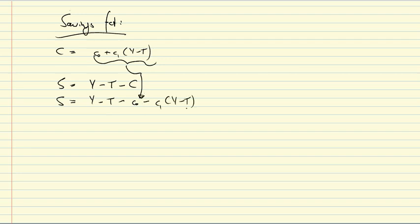C is equal to C0 plus C1 times Y minus T, and the savings function—well, what is savings? Savings is everything that is left over after you received your income, paid your taxes, and consumed. So we can therefore write S equal to Y minus T minus C, which gives us Y minus T minus C0 minus C1(Y - T).